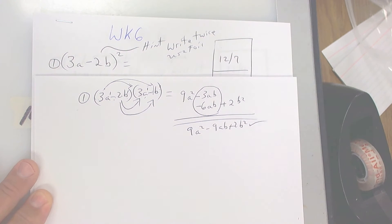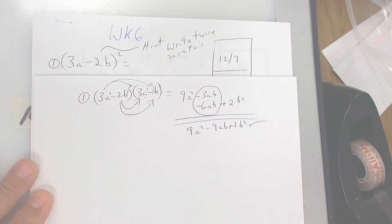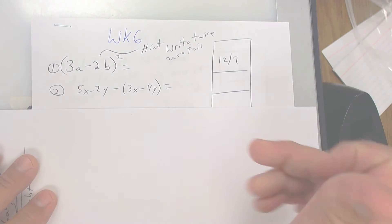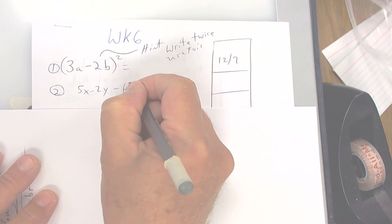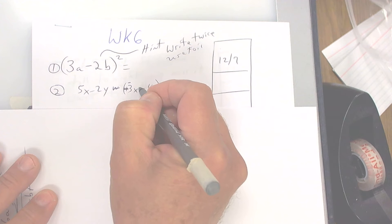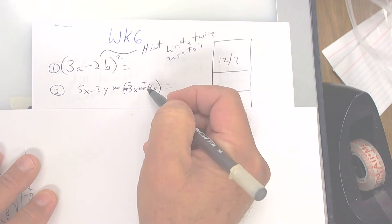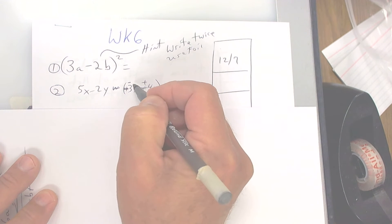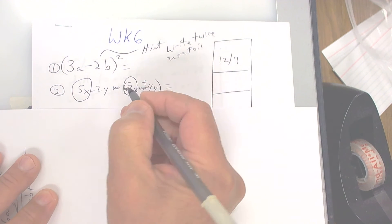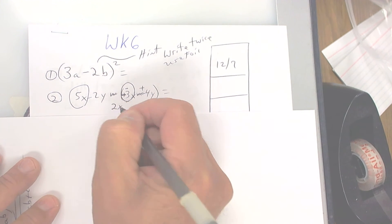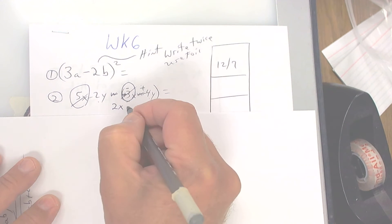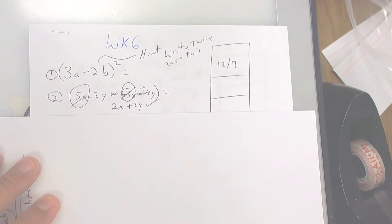Okay, make sure you can do that. This one right here — you have to distribute that negative sign. A negative times a positive is going to make that a negative, and a negative times a negative is going to make that a positive. Remember, I want you to scratch the sign out and rewrite it. So five x minus three x is two x, and then a negative two y and a positive four y is a positive two y. That should be your answer.